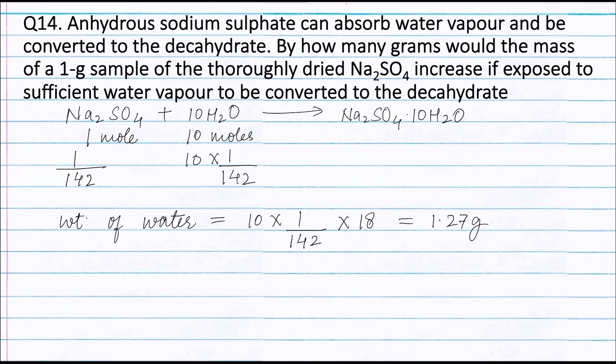The increase in weight of sodium sulphate is due to absorption of water vapour, and the weight of water absorbed is 1.27 grams. Therefore, the increase in weight of sodium sulphate is 1.27 grams, and the total weight of sodium sulphate decahydrate is 2.27 grams.